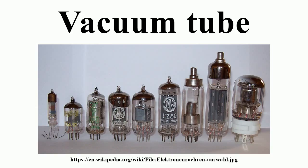Tubes are also used to display information, in addition to more specialized functions such as electron microscopy and electron beam lithography. X-ray tubes are also vacuum tubes. Phototubes and photomultipliers rely on electron flow through a vacuum, though in those cases electron emission from the cathode depends on energy from photons rather than thermionic emission. Since these sorts of vacuum tubes have functions other than electronic amplification and rectification, they are described in their own articles.